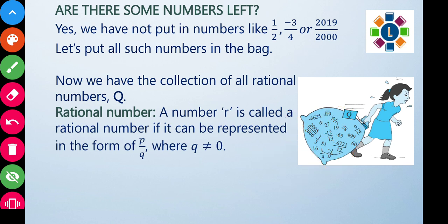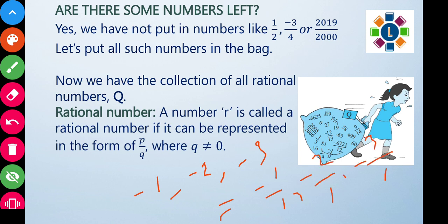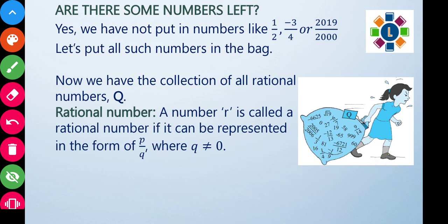Integers such as minus one, minus two, minus three can be written as minus one by one, minus two by one, minus three by one. So integers are also rational numbers. Integers together with fractions — both positive and negative — in P/Q form where Q is not equal to zero, are all rational numbers.